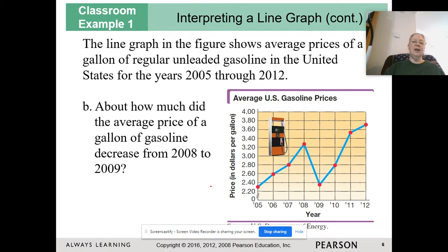Part b: About how much did the average price of a gallon of gas decrease from 2008 to 2009? So we decided this was approximately $3.25, and in 2009, I'm going to go with $2.35.